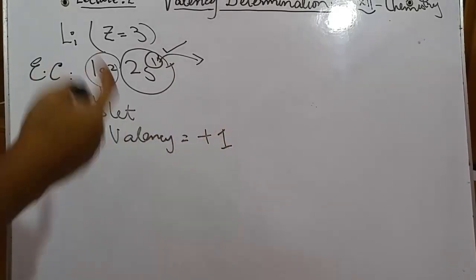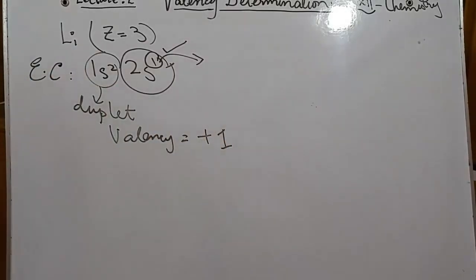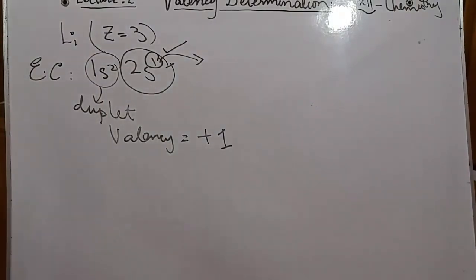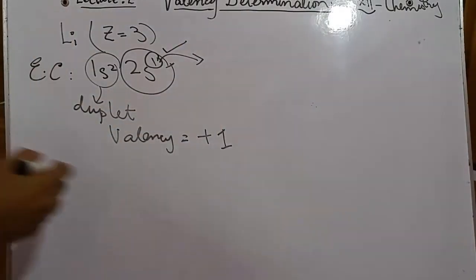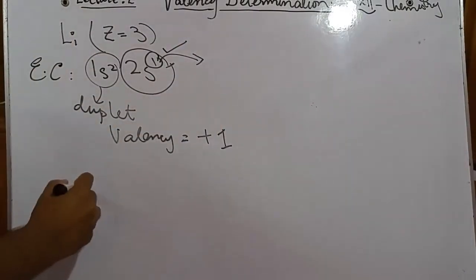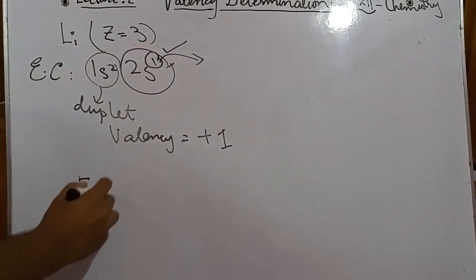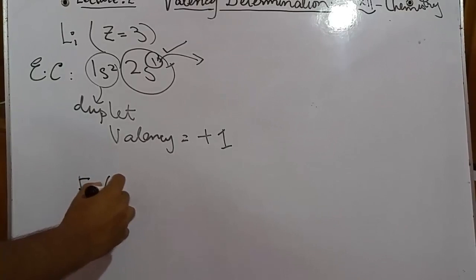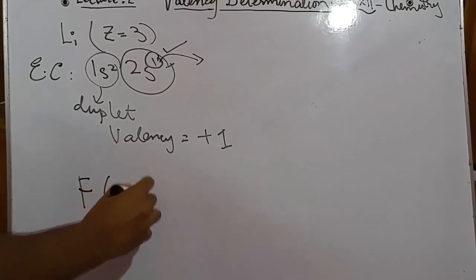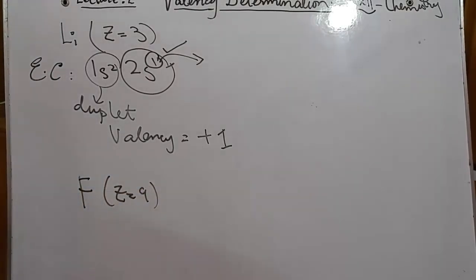According to the theory, if you have one, two, or three electrons in the outermost shell, you will always lose electrons. Lithium needs to remove this one electron so that its duplet is completed and it becomes stable. So the valency of lithium is +1. The plus sign is used because when lithium loses its negatively charged electron, the element becomes positively charged.